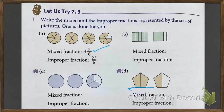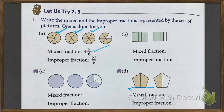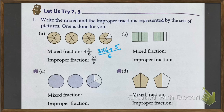Now let's go to our exercise. The question says: write the mixed and improper fraction represented by the sets of pictures. Number 1 is done for you. Here it is written 3 and 5 by 6, because 3 is a completely whole number with no fraction. But here 5 parts are colored — 3 parts are colored fully and only 5 of 6 parts in the last piece. So we wrote 3 5 by 6. Then we multiplied 3 into 6 plus 5, divided by 6. So 3 times 6 is 18, and 18 plus 5 divided by 6 gives 23 by 6.